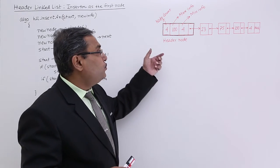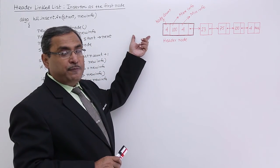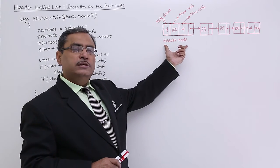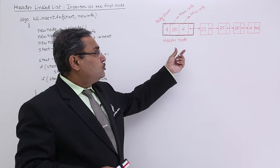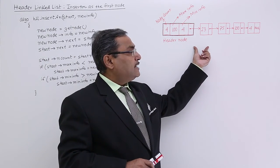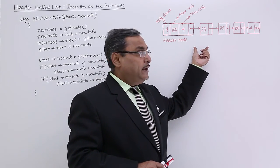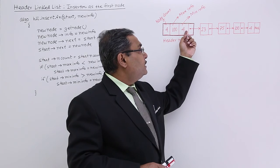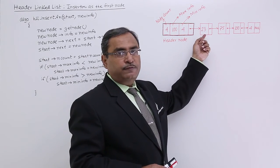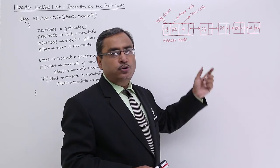That does not mean the new node will get inserted here before the header node, because the header node will always remain as a first node. So the new node will be inserted as a first node of the header linked list means the first node will be here. That means in between this header node and this node with the info 23. So here the new node will get inserted.